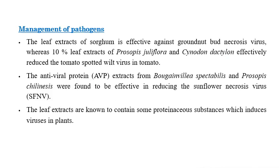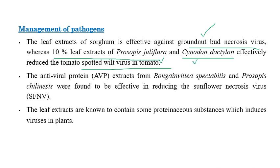Sorghum leaf extract can be used against groundnut bud necrosis virus. A 10 percent leaf extract of Prosopis juliflora and Cynodon dactylon is effective against tomato spotted wilt virus in tomato. So sorghum extract is effective against groundnut bud necrosis, while Prosopis juliflora and Cynodon dactylon extracts are effective against tomato spotted wilt virus.